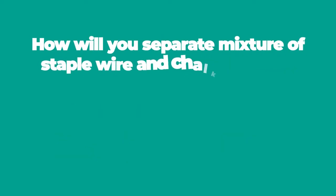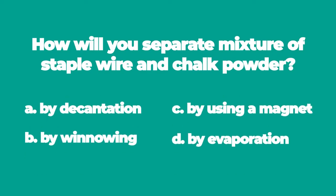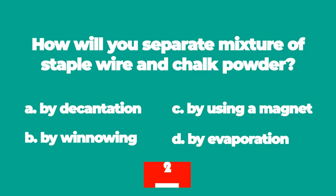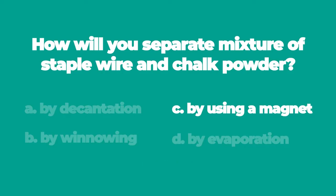Number 4: How will you separate a mixture of staple wire and chalk powder? A. By decantation. B. By winnowing. C. By using a magnet. D. By evaporation. C. We can separate a mixture of staple wire and chalk powder by using a magnet.